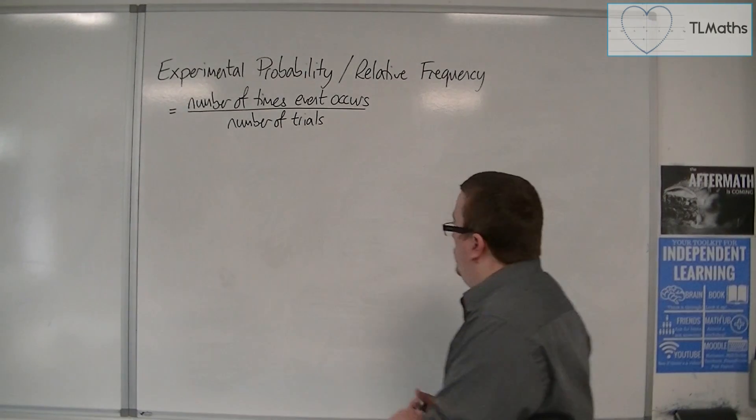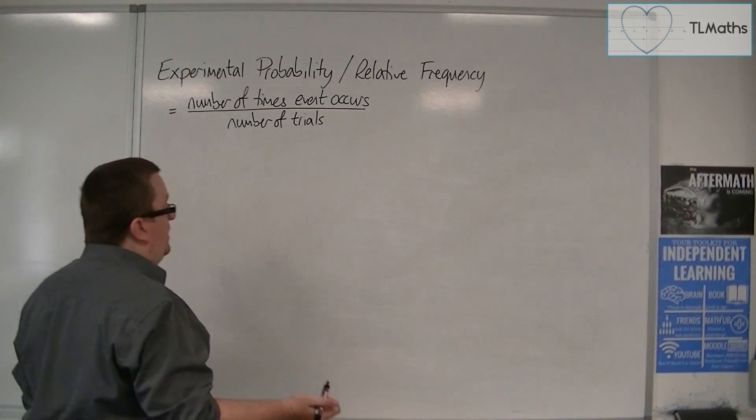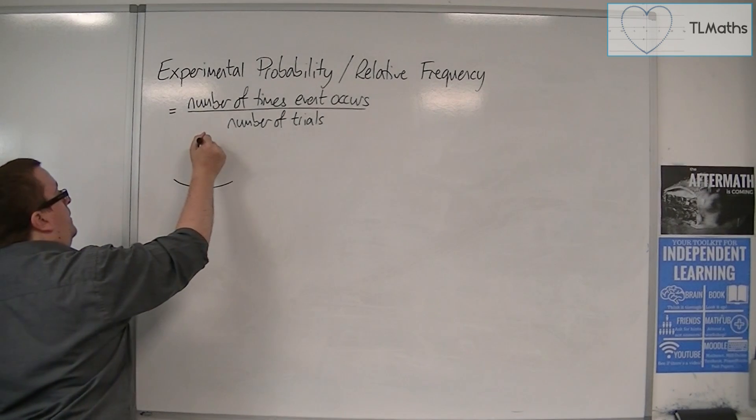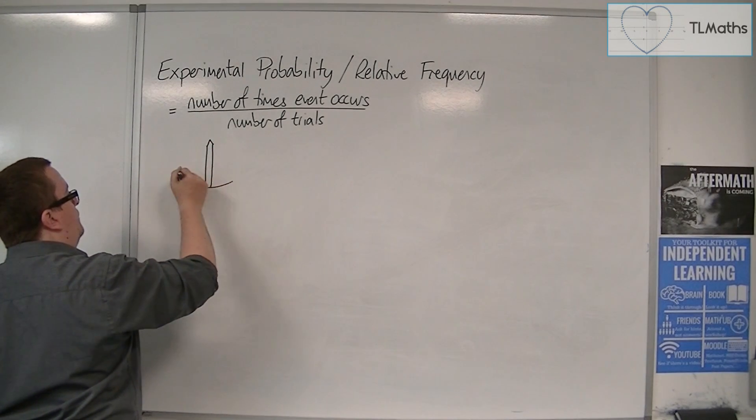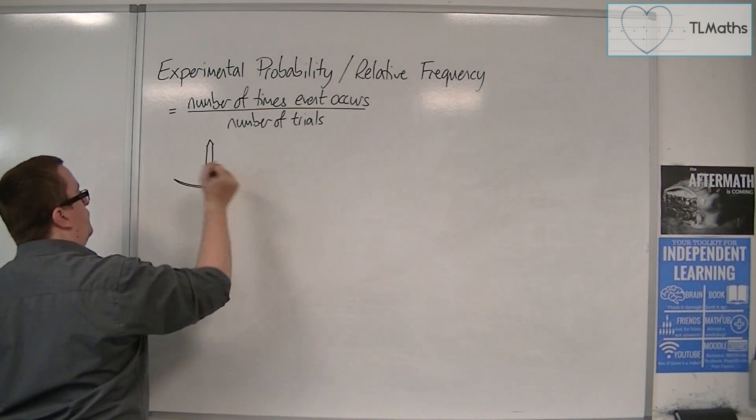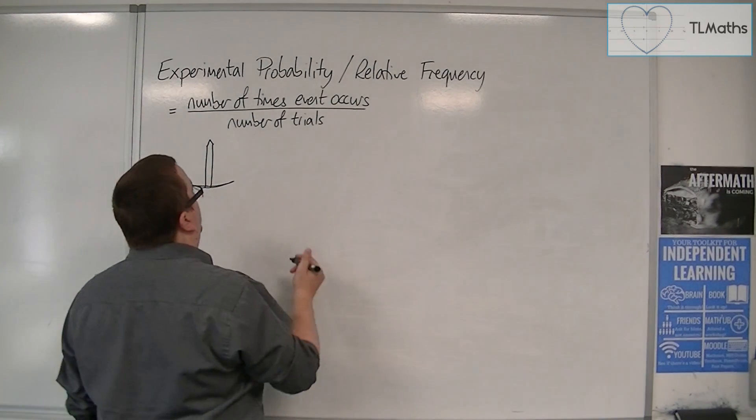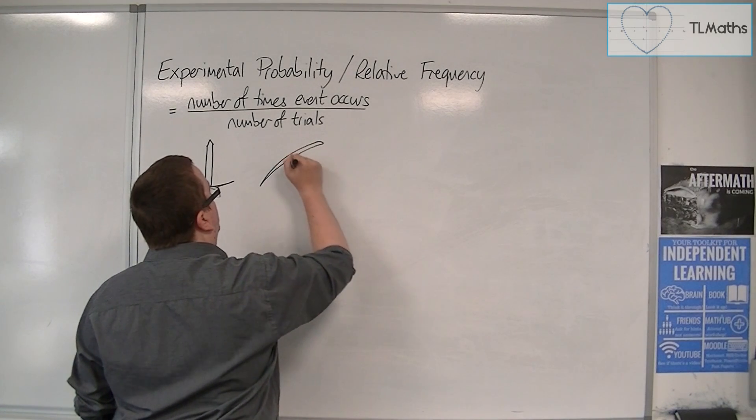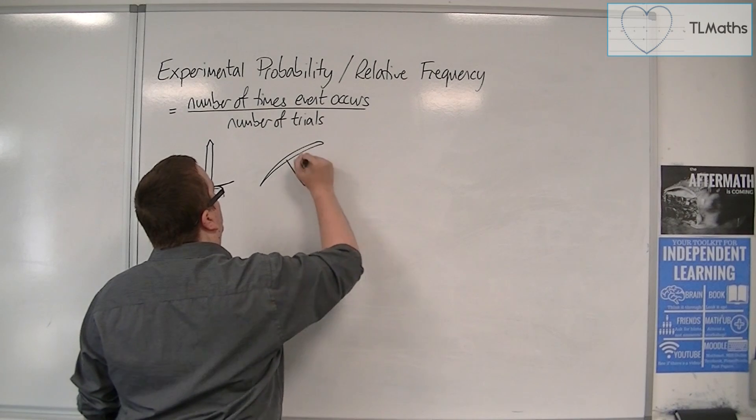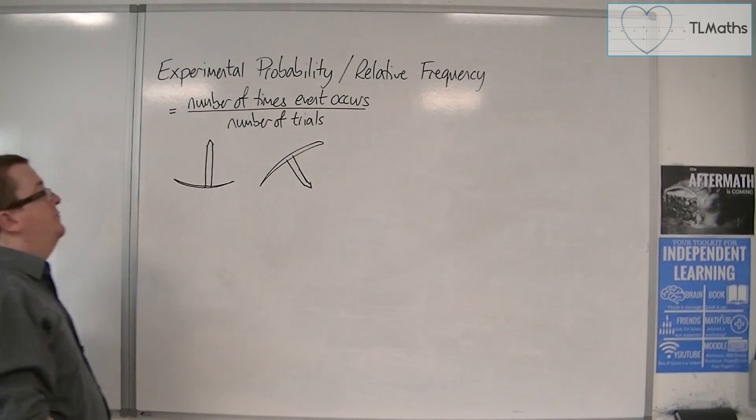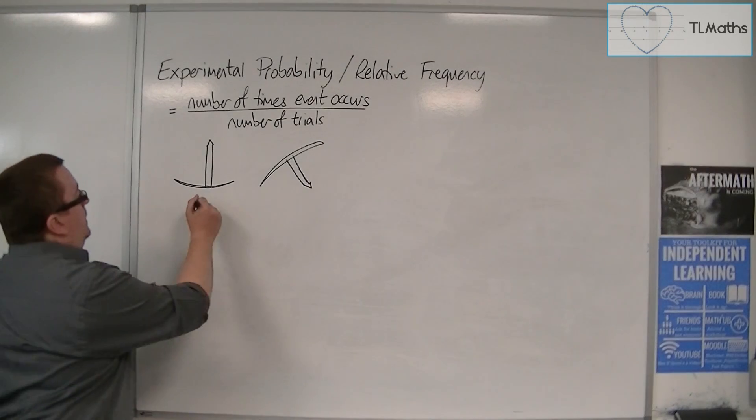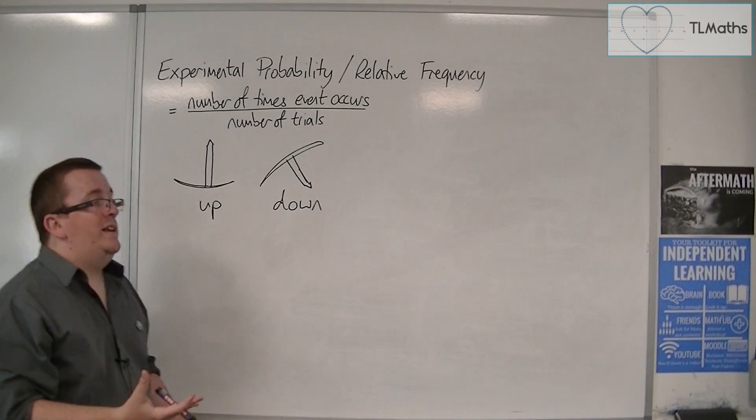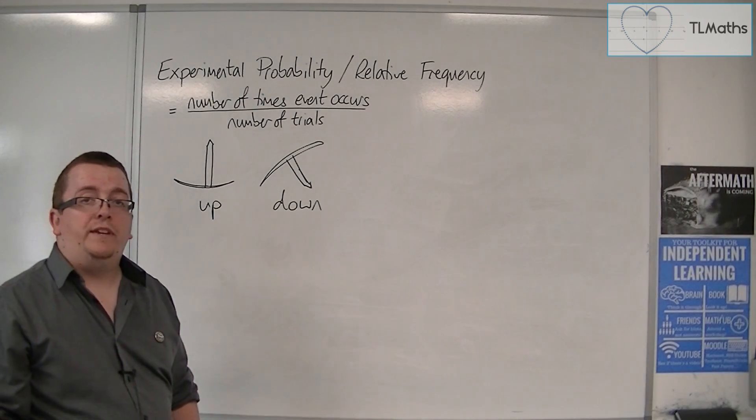So, there are two possibilities that we can consider. Either it's point up, like so. Or, it lands on its side. And so, we would deem that as point down. Now, how often should it land point up versus point down?